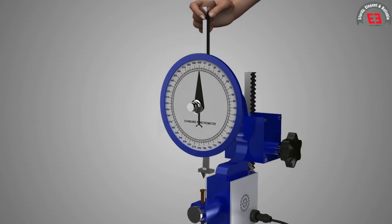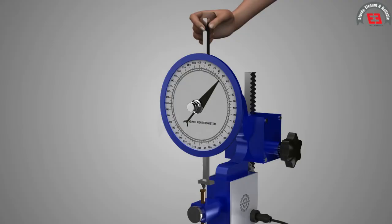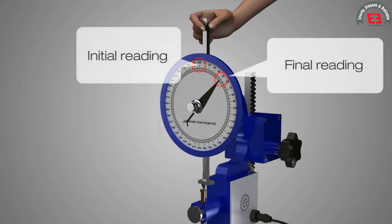The final reading is taken on the dial by rotating the knob. The difference between final reading and initial reading is noted as penetration value in one-tenth of a millimeter.